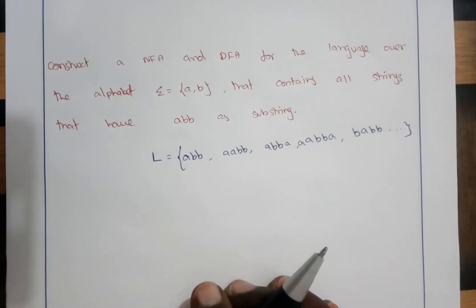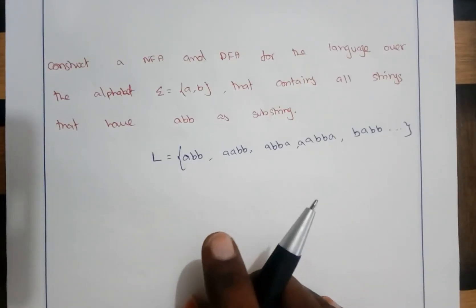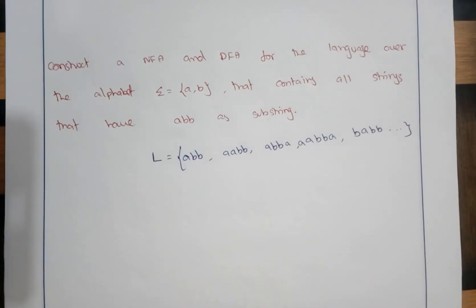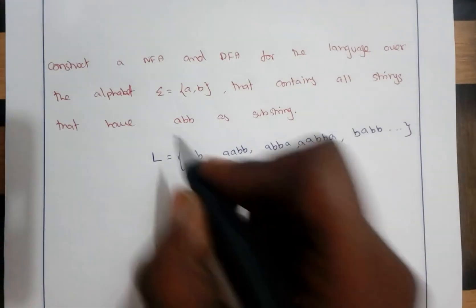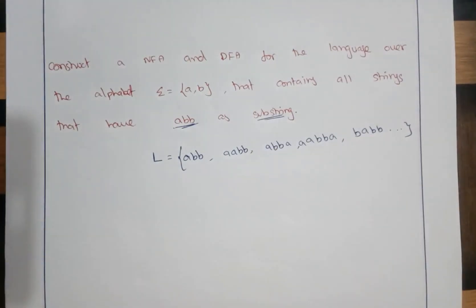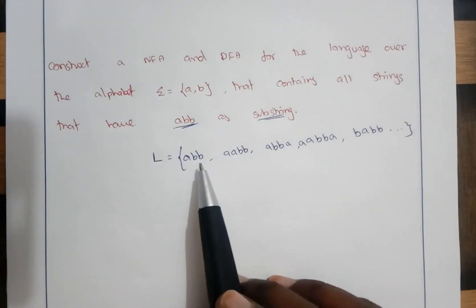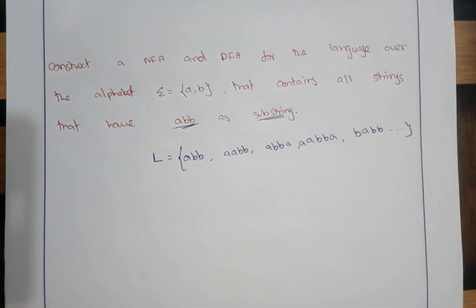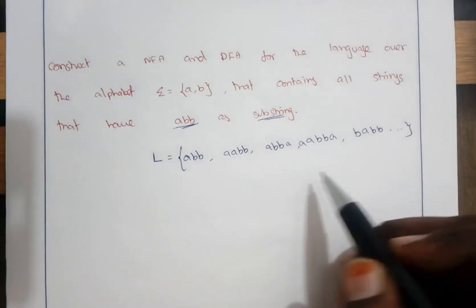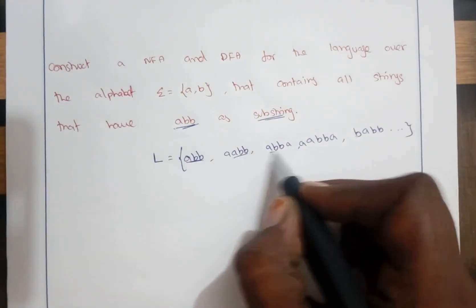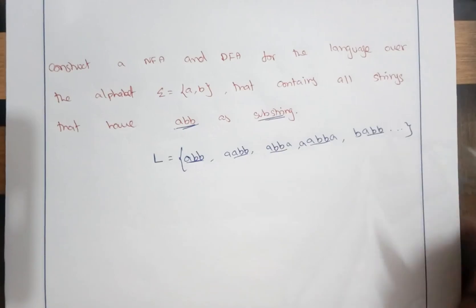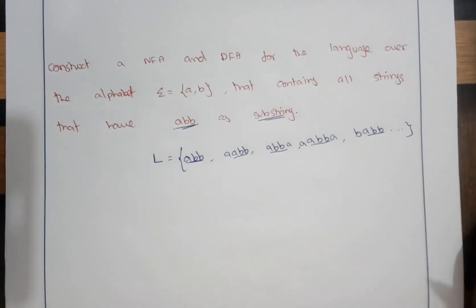I will give you one more example for the construction of NFA and DFA. Here I have considered the language over the alphabet {A, B}, and it contains all strings that have ABB as a substring. So substring means we should have ABB, and in the prefix of it we can have anything, and in the suffix of it again we can have anything. Any place if you have ABB, then the string should be accepted.